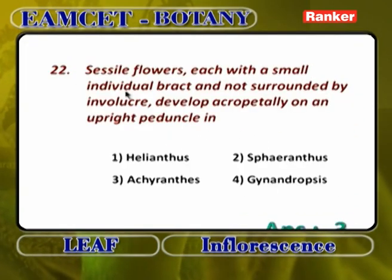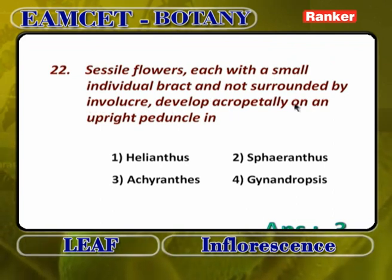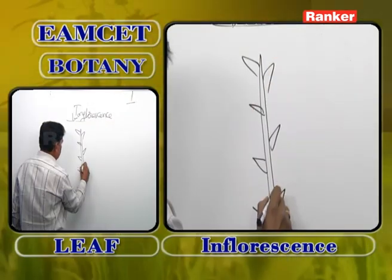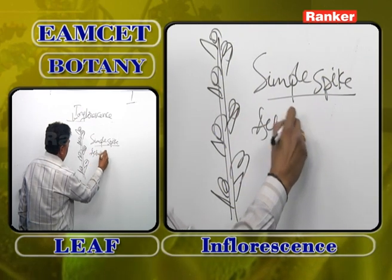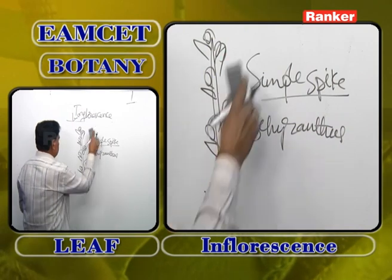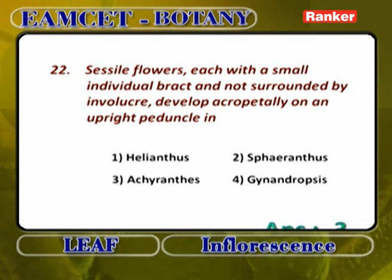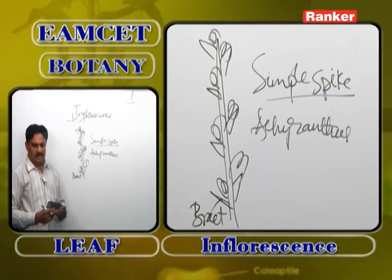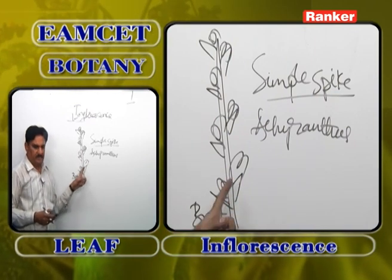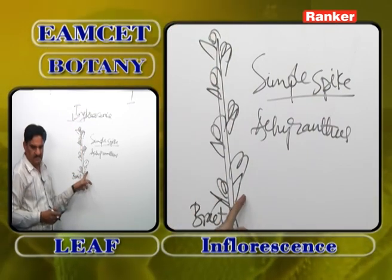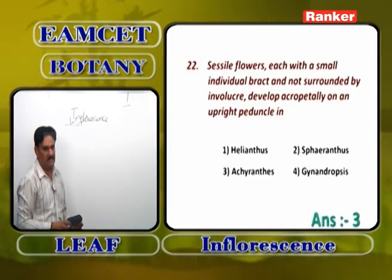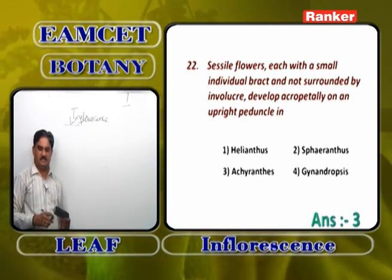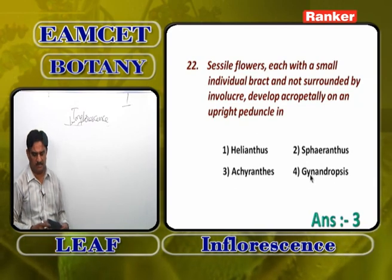Sessile flowers, each with a small individual bract and not surrounded by any involucre, developing acropetally on an upright peduncle — this describes a simple spike, found in acanthus and amaranthus. Helianthus is a heterogamous head, spiranthes is a compound head, and gynandropsis is a simple corymb. So the answer is acanthus and amaranthus.